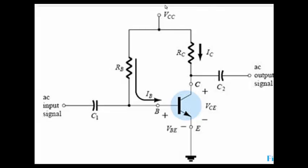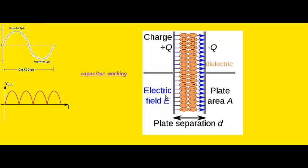VCC can be plus 5 volts or plus 12 volts. You can see the standard AC output signal and AC input signal. These are the capacitors used. When actually doing the circuit, you will have to take out the capacitors — I'll tell you why. When an AC signal is applied, the positive half cycle and negative half cycle go into the terminal.